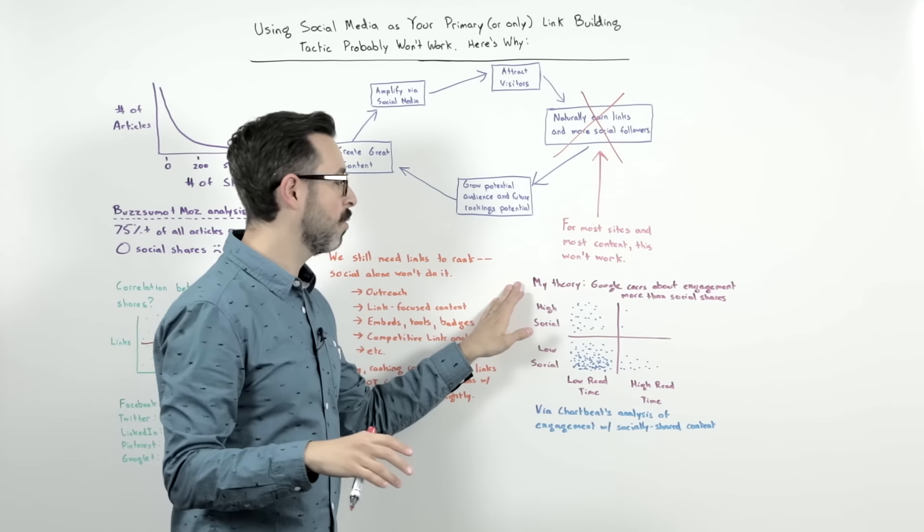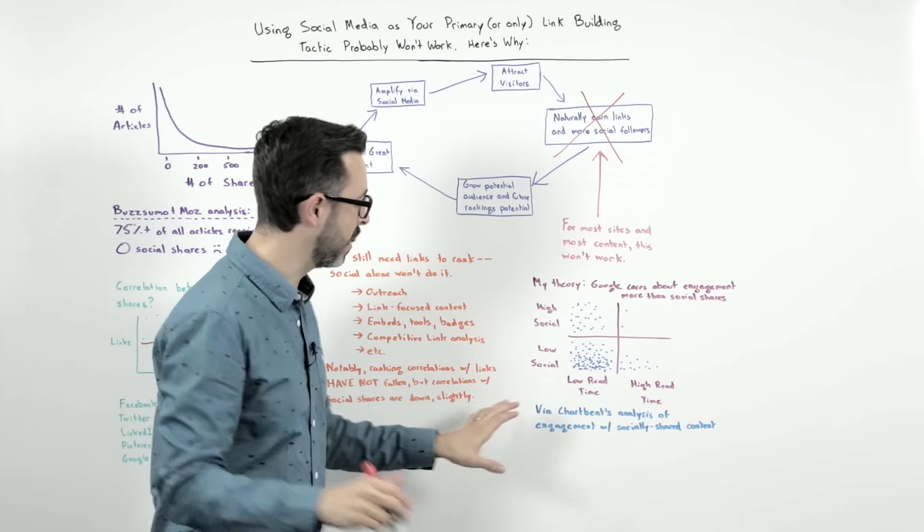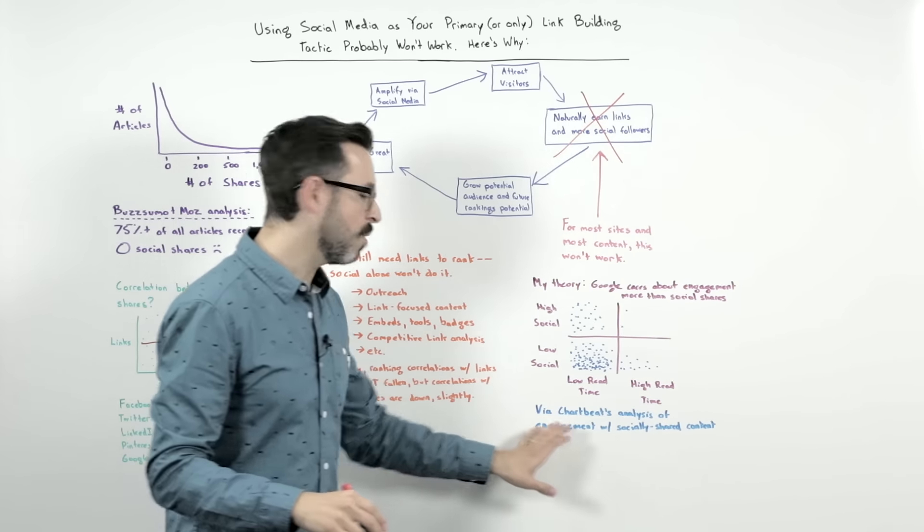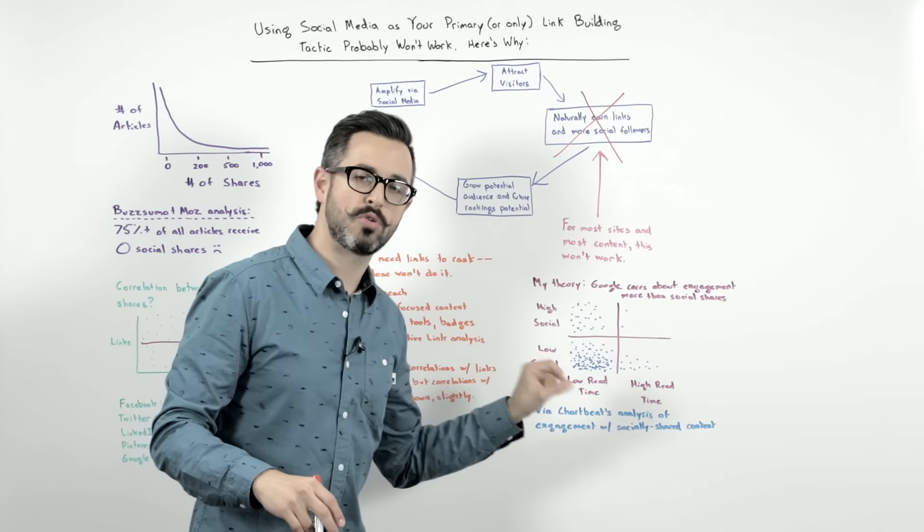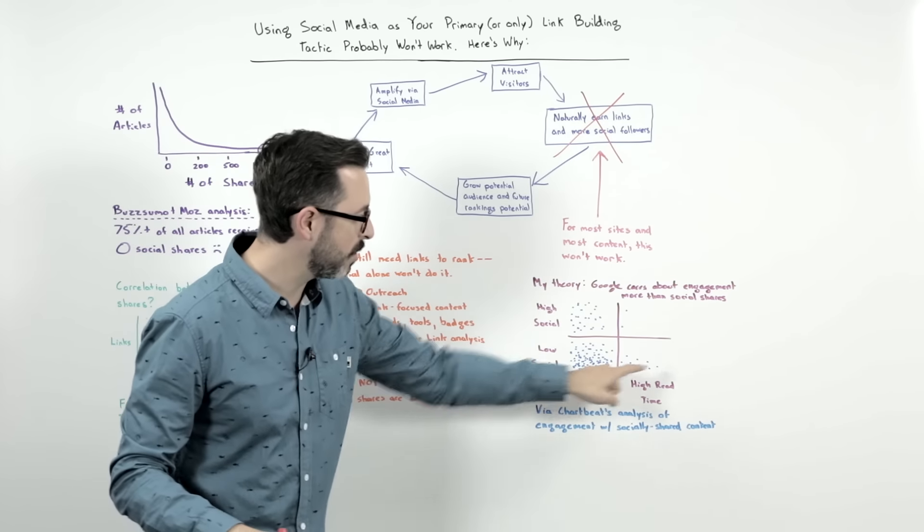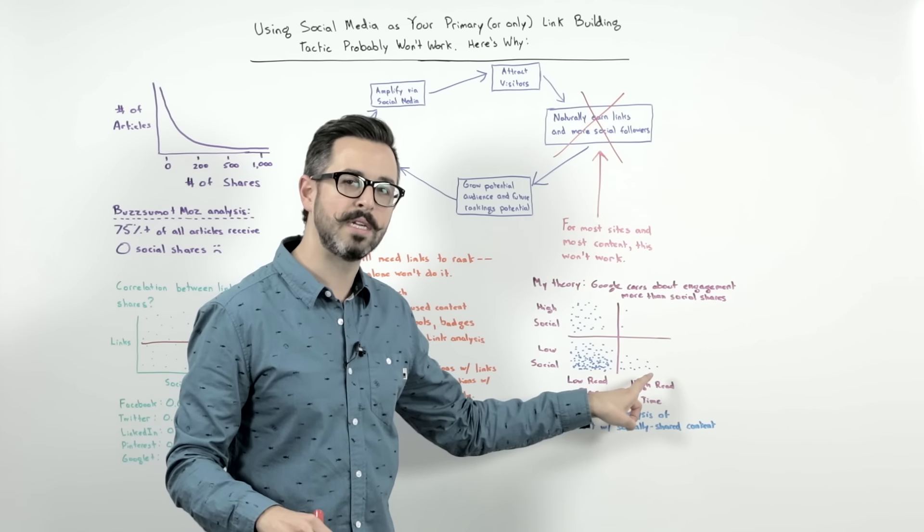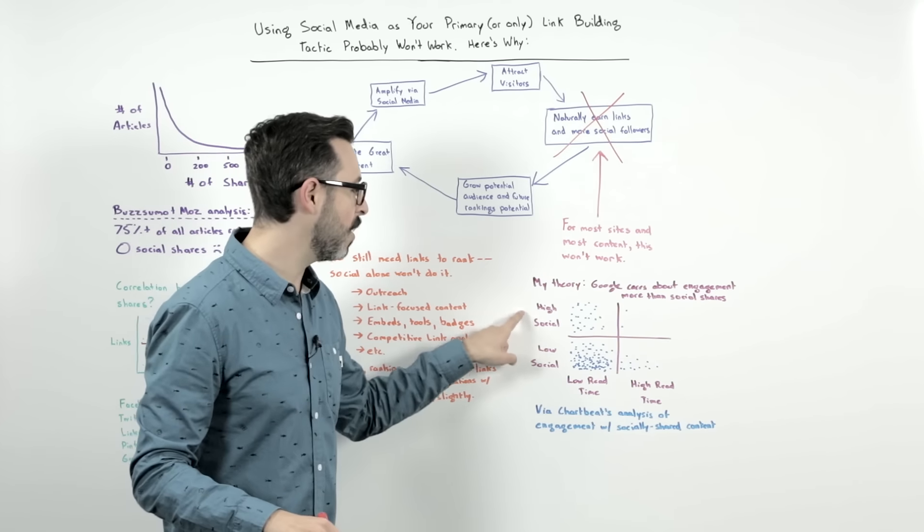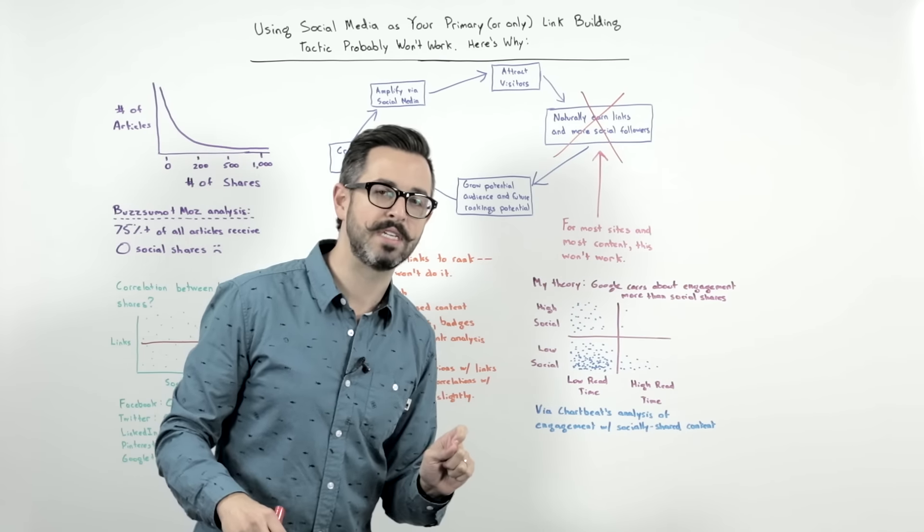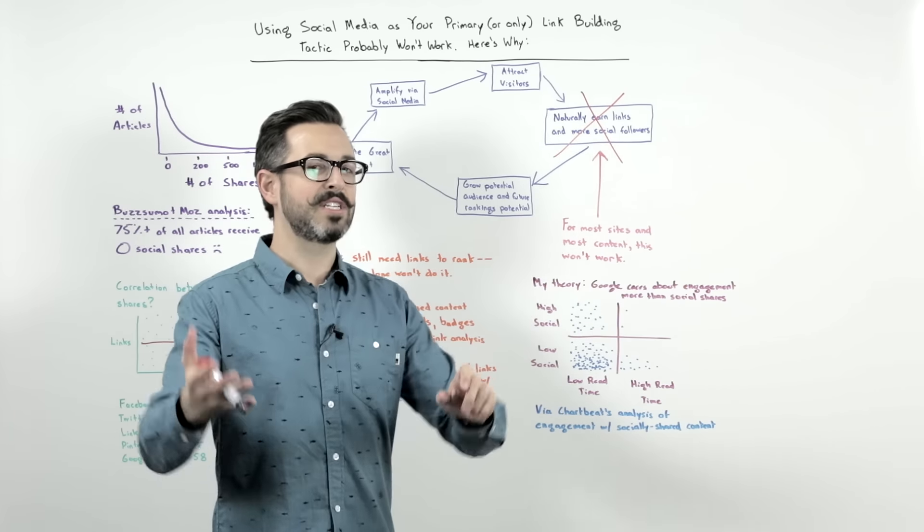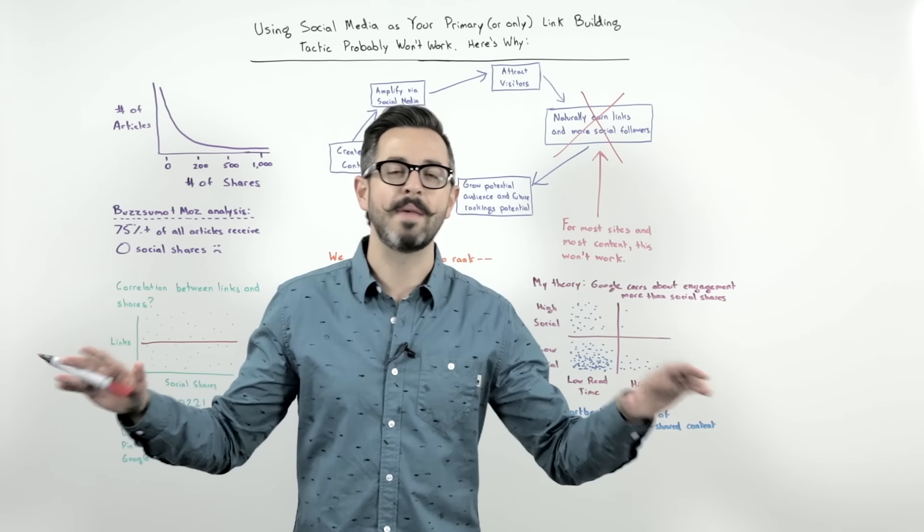I think what Google sees is something Chartbeat showed a few years ago. This was another excellent study that I encourage you to check out. Chartbeat basically analyzed engagement, engagement on socially shared content. What they saw was a plot that looks like this. Very, very few social articles have high read time, and even the ones that have lots of social sharing have very little read time.